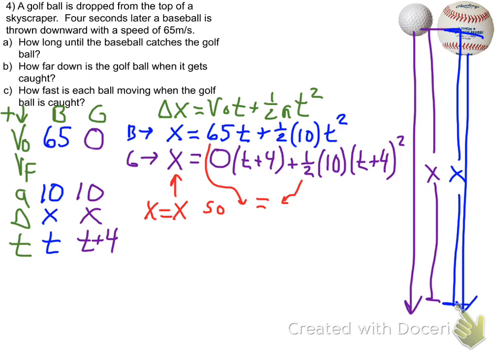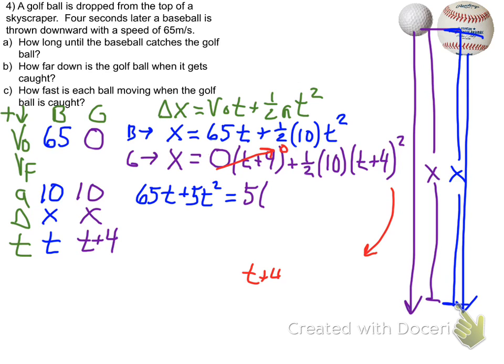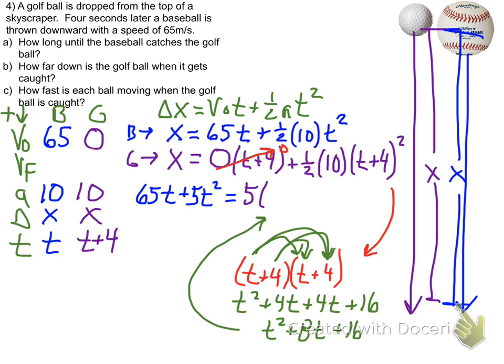So the X's are equal, which means we can set the other sides of the problem equal to each other. So we have that written out. And we put down our golf ball and baseball part. The T plus 4 squared, remember we need to FOIL that out. So we're going to end up with T squared plus 8T plus 16.